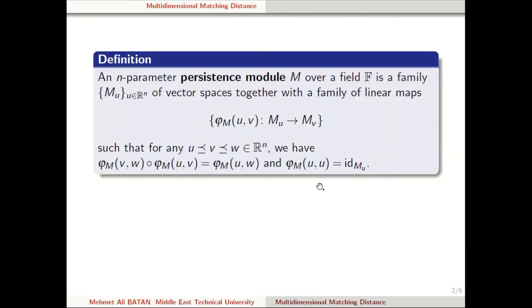What does partial order mean? Partial order — u is partially less than v — means each component of u is less than each component of v.